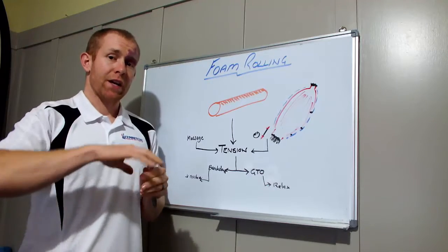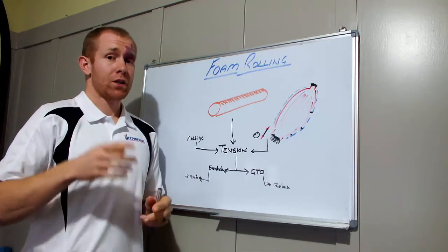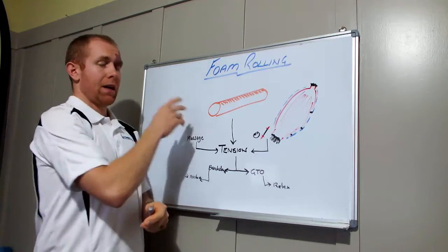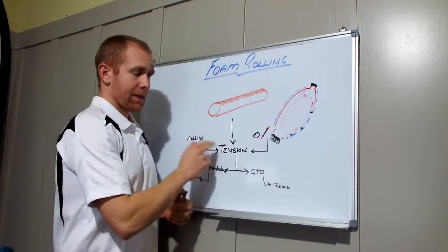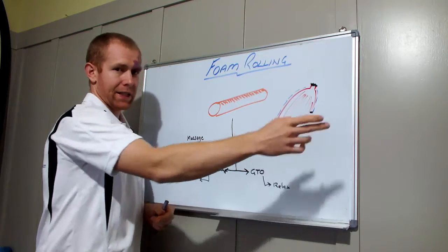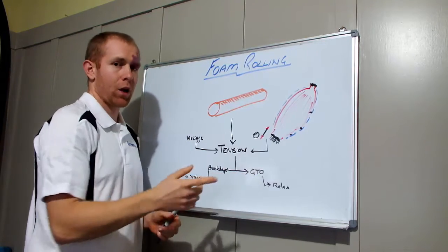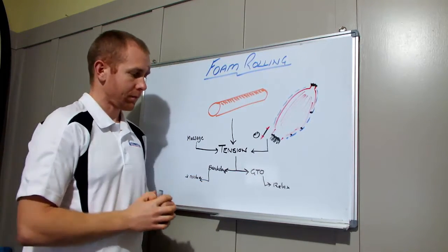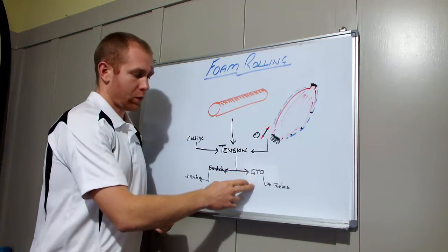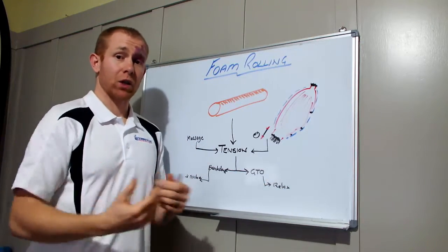So with our foam rolling, what we're trying to do is develop this tension. One, to cause the breakdown of these adhesions in the myofascial layer, and two, to stimulate the golgi tendon organs. We stimulate the golgi tendon organ, we get the muscle to relax and that gives us increased mobility.